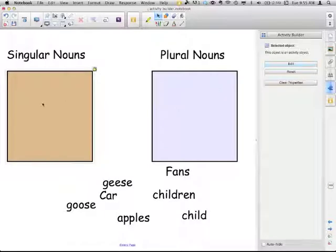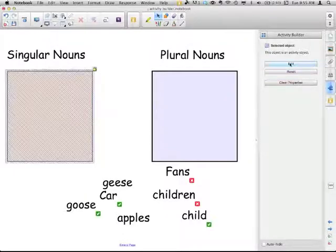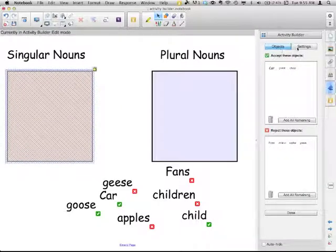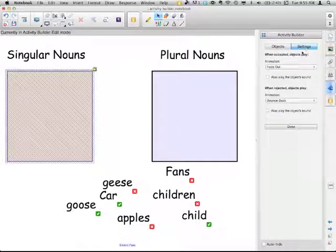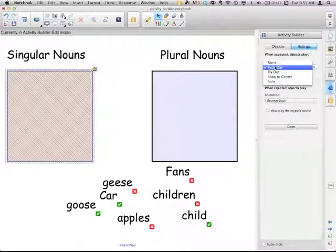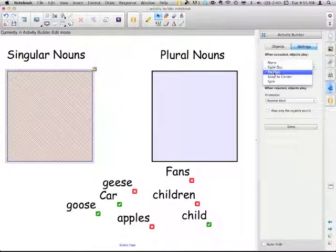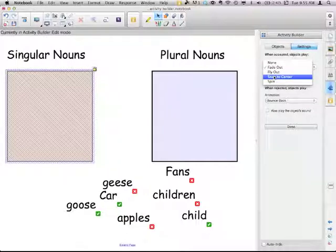If you want to change anything, so here we have singular noun selected. We can go to edit. So we did the objects, but here's also the settings tab. So let's click on that. When accepted, the objects play the animation fade out. So it disappears. It fades out. It can fly out and shoot off the page. It can snap to the center of this object, which would be this box.